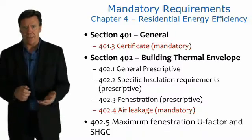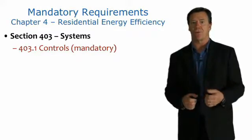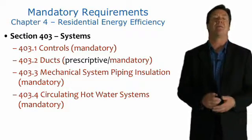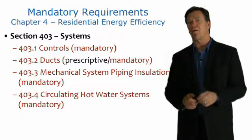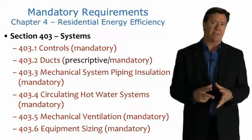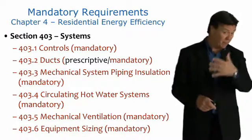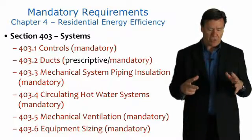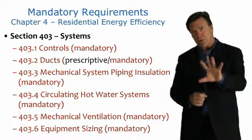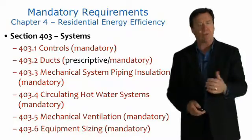With regards to mandatory requirements: a certificate is mandatory; air leakage control — sealing homes — is mandatory; controls such as thermostats are mandatory; duct sealing is mandatory; mechanical system piping insulation for hydronic systems and circulating hot water systems is mandatory; mechanical ventilation is mandatory. Equipment sizing is also mandatory, meaning heating and cooling systems must be sized appropriately using the Air Conditioning Contractors of America algorithms. Systems tend to be oversized — an oversized air conditioner short cycles, cools the house quickly but doesn't run long enough to dehumidify the air, so the house feels cold and clammy. Buildings can be more energy efficient and customers more comfortable if systems are sized and designed right.